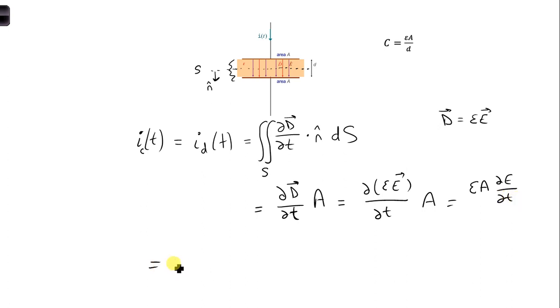Well, we can then write this as ε A dE/dt. And what I'm going to do here is I'm going to multiply times d over d. And the reason is we want to be able to relate the voltage to the electric field. Since we're looking for a relationship between the current and the voltage, we want to change our electric field to the voltage between the plates of the capacitor.